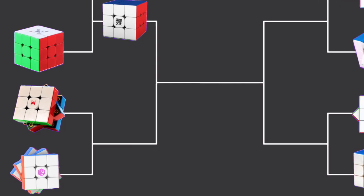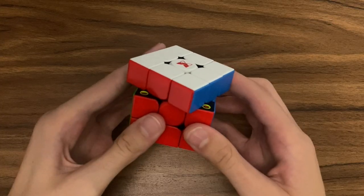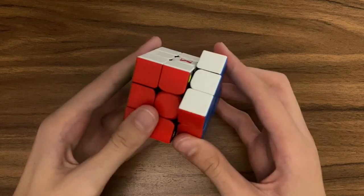Next we have the X-Man Tornado and MS-Cube MS3 version one M enhanced. Performance is going to have to go to the MS3. If it weren't for the terrible corner cutting on the Tornado, it may have won that category.